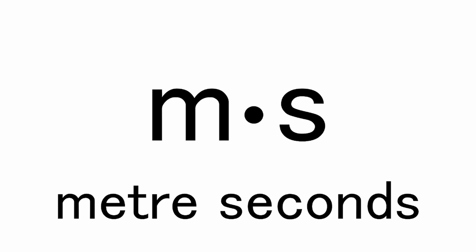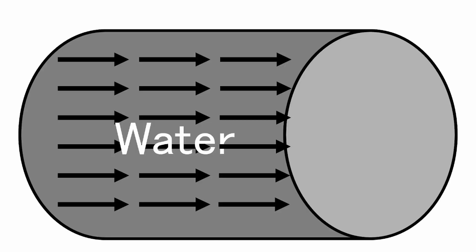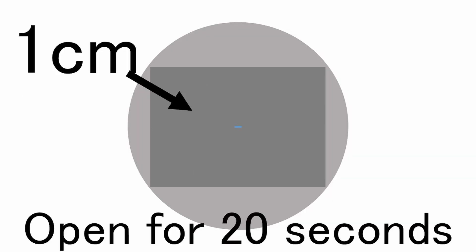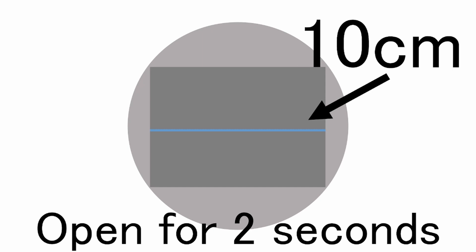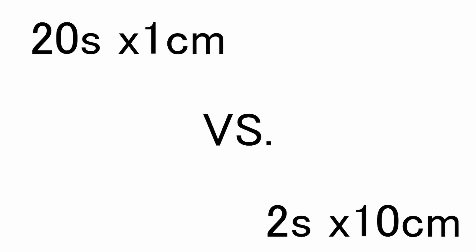So what is a metre second? From the definition of its unit, it represents an object being displaced by one metre for one second of time passing. That can easily be confused with metres per second from velocity. So now consider water in a pipe with a gate valve. If you open the gate of the gate valve with a rectangular cross-section by one centimetre for 20 seconds, this will provide the same absement as opening it by 10 centimetres for two seconds. In both cases, the absement is 20 centimetre seconds. The amount of water that flows out is linearly proportional to the absement of the gate, so in both instances the amount of water is the same.